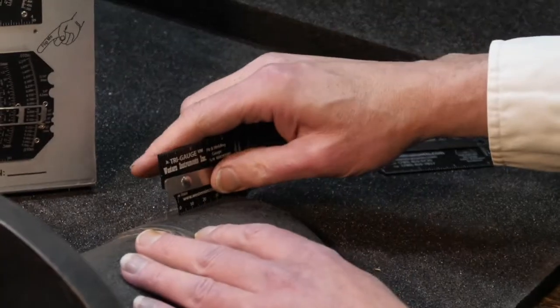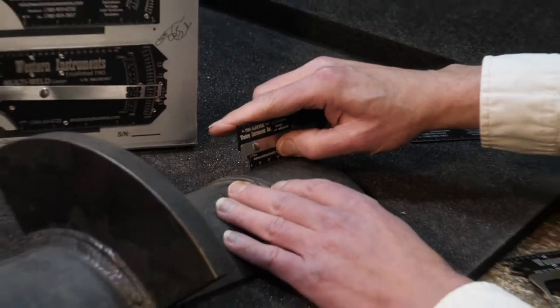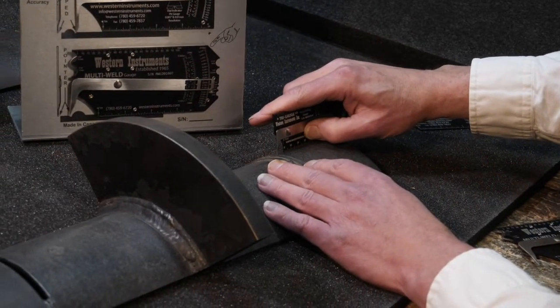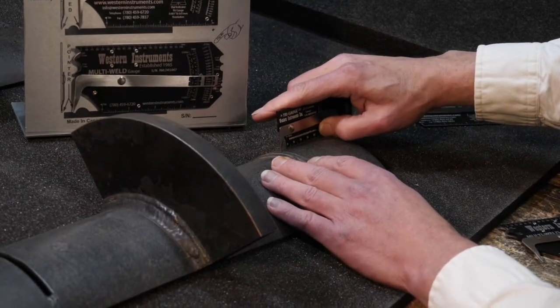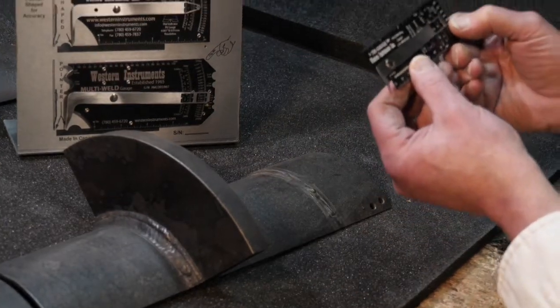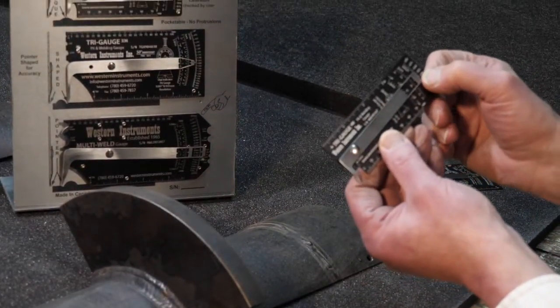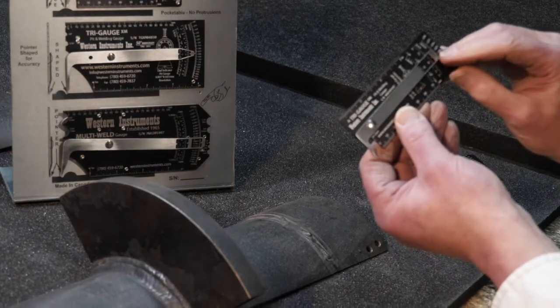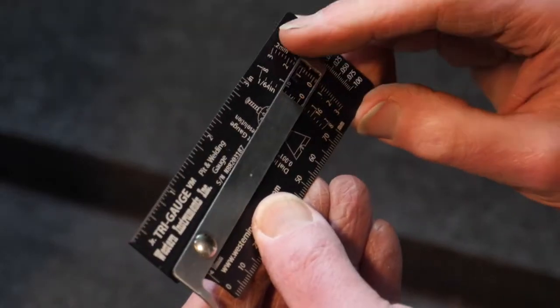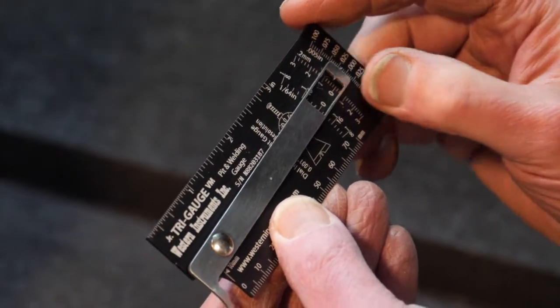So we'll come over here to the undercut that we have artificially machined in here, and we can see the undercut here is about 15 thou deep. You can see the measurement there, or in millimeters, it's about 0.25 millimeters.